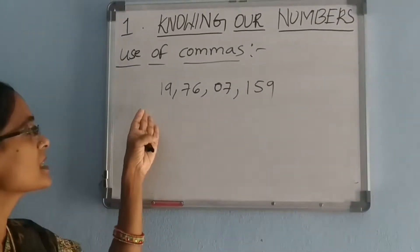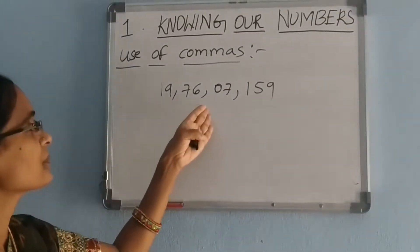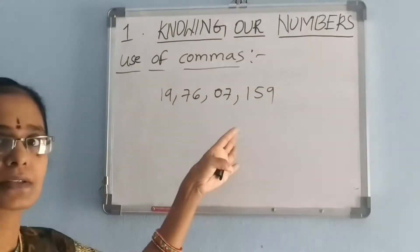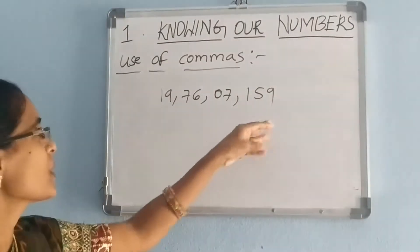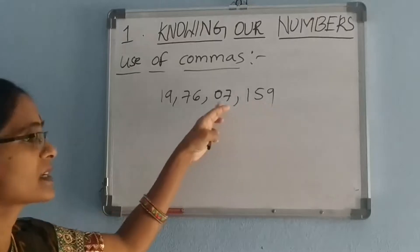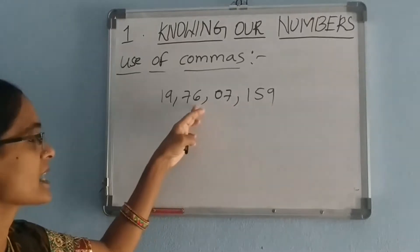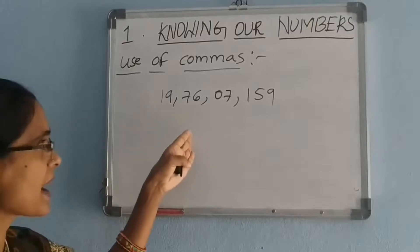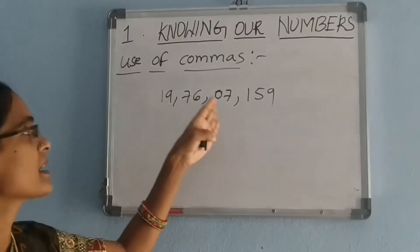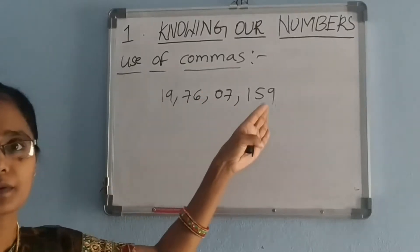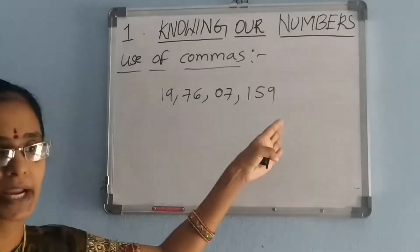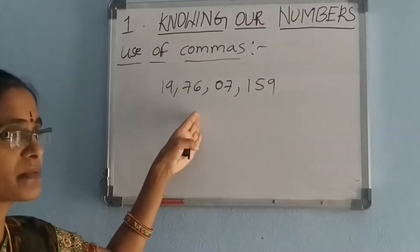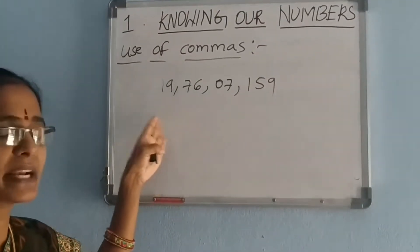Similarly, we can easily read numbers which are separated by commas. For example: 1s, 10s, 100s, 1000s, 10,000s, lakhs, 10 lakhs, crores, 10 crores — giving us 19 crores, 76 lakhs, 7159. This number is separated by commas, so we can read it easily.